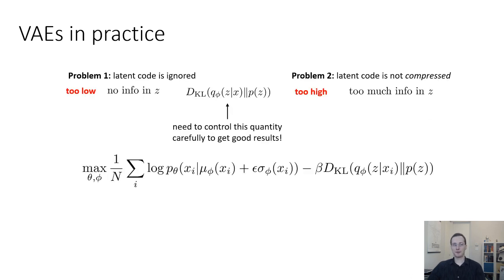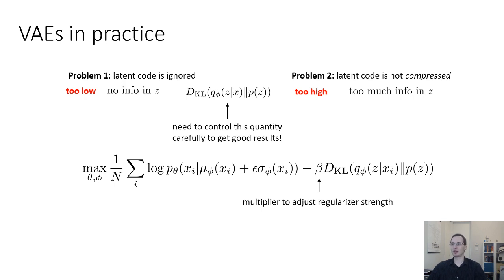You need to control the KL divergence carefully. A common trick is to put a multiplier beta in front of the KL divergence term — a scalar hyperparameter you adjust depending on which problem you're seeing. If your z's are being ignored (problem one), you need the KL divergence to be higher, which means decreasing beta so the VAE is free to raise the KL divergence without as much penalty. If the KL divergence is too high (problem two), you increase beta to force q_phi of z given x_i closer to p of z, which improves sample quality.